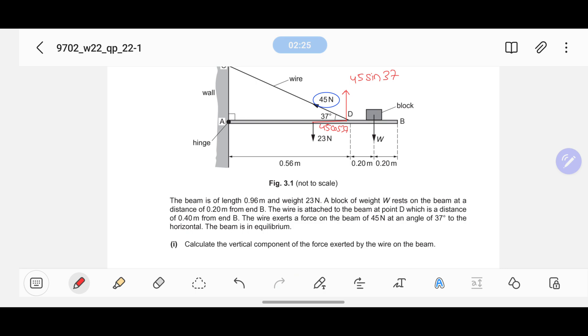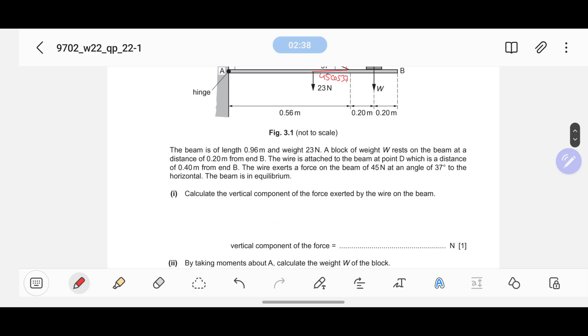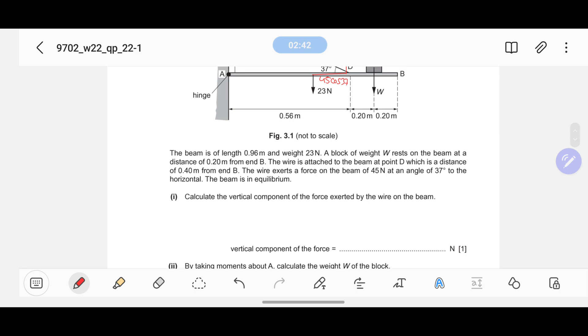The beam is in equilibrium, which means moments clockwise and moments anti-clockwise are all equal, forces upward and forces downward are equal. Calculate the vertical component of the force exerted by the wire on the beam.